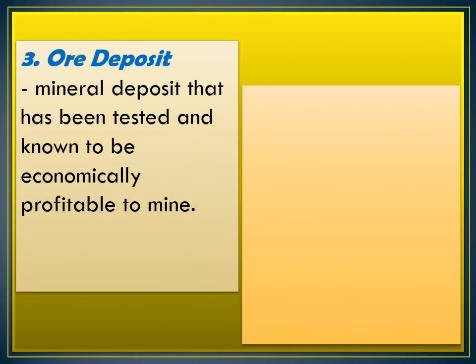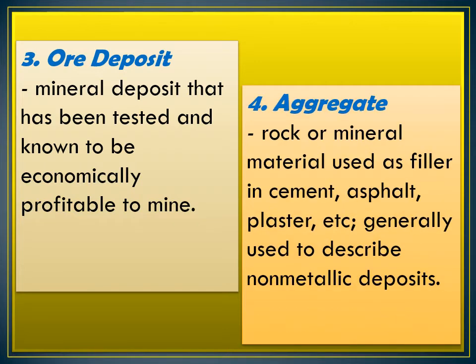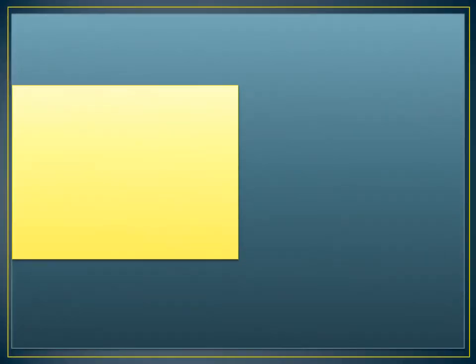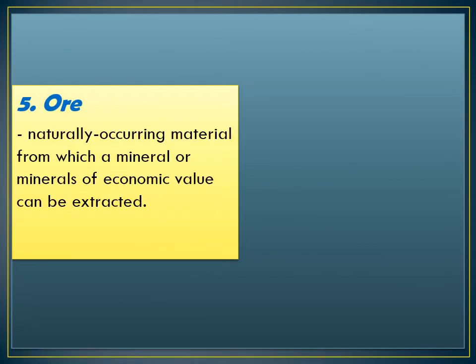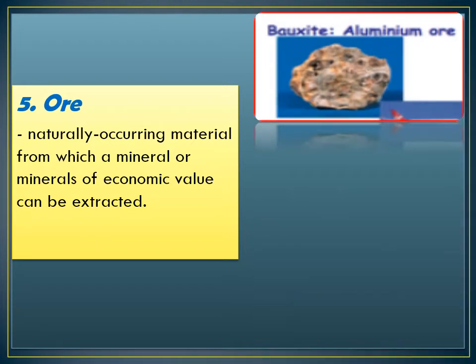Another, we have ore deposits. This one talks about the mineral deposits that have been tested and known to be economically profitable to mine, such as gold and silver. Aggregate also refers to rocks or minerals that are described as non-metallic and are usually used as fillers in cement, asphalt, and plaster. Lastly, we have ore. These are the naturally occurring materials from which a mineral or minerals of economic value can be extracted, such as aluminum ore, iron ore, and zinc ore.